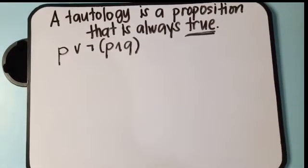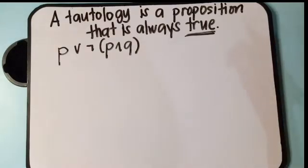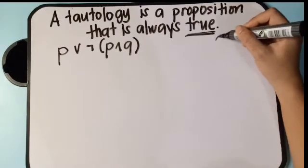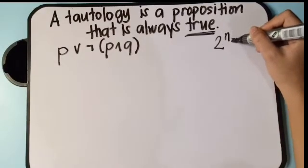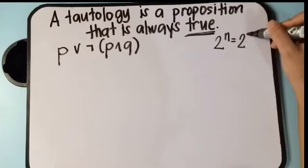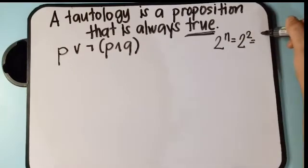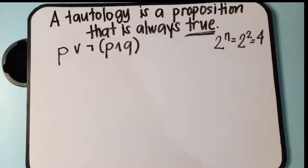Let's have another example. Let's show that this proposition is a tautology using the truth table. As you can see, we have two propositions — proposition P and proposition Q. Applying the formula 2 raised to N, that is 2 raised to 2, which gives us 4. So we will have four rows in our truth table.